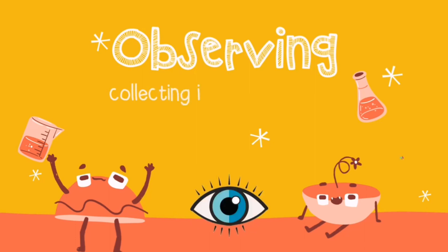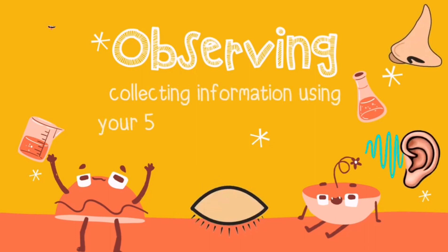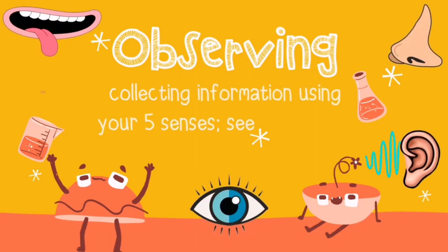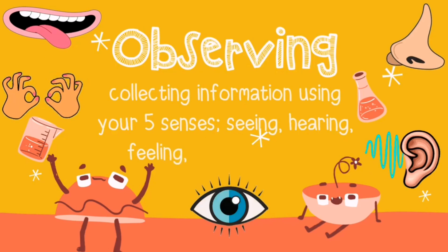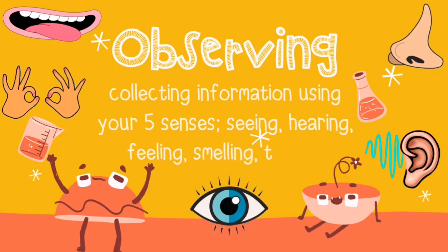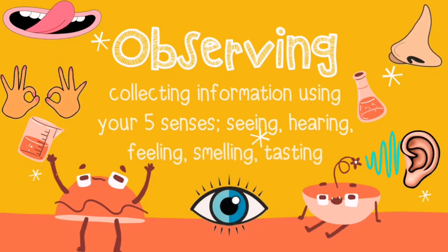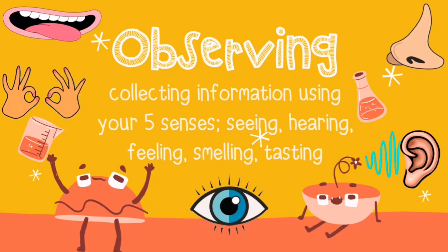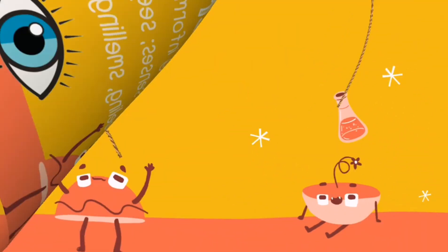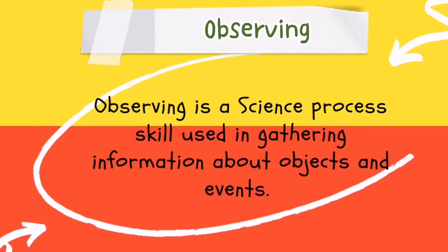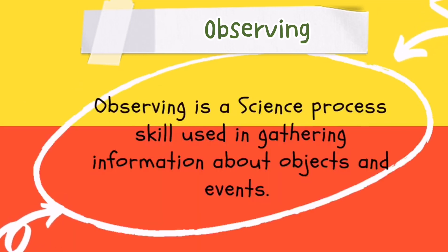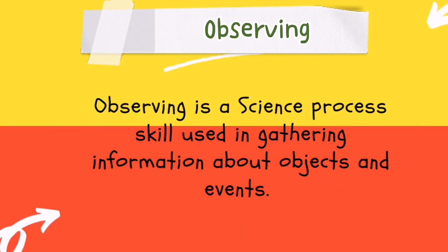Observing. This is collecting information using your five senses like seeing, hearing, feeling, smelling, and tasting. Scientists observe things and events so that their studies become reliable. When you are equipped with this skill, it is quite easy for you to get information correctly. Also, observing is a science process skill used in gathering information about objects and events.